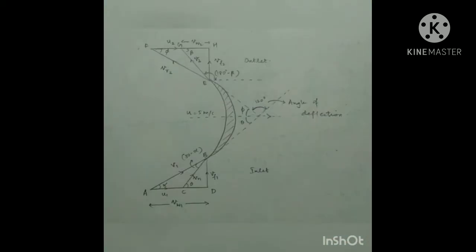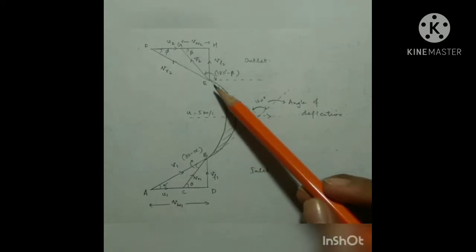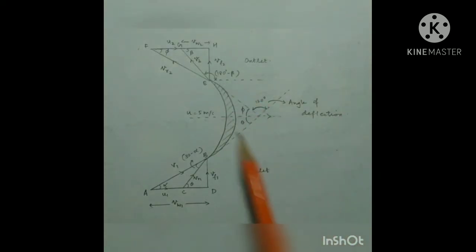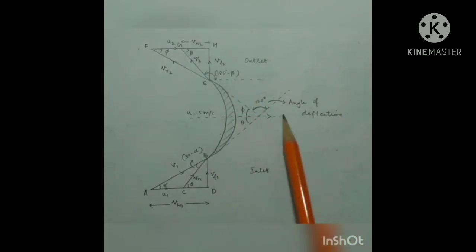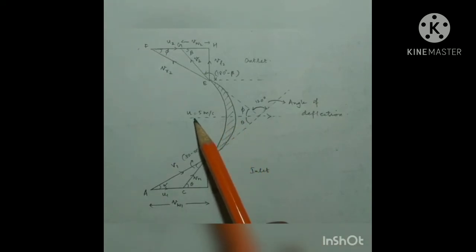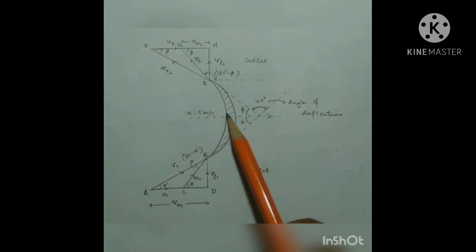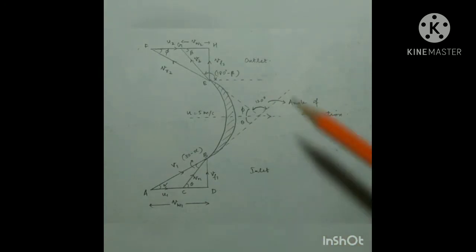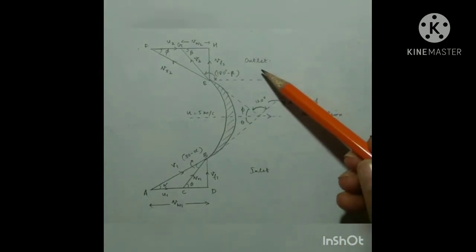Now, before heading to the answer, let us draw the figure properly. Here we have the curved vane which is moving in this direction with the velocity u equal to 5 m/s. Let us draw the velocity triangles at both the inlet and the outlet.